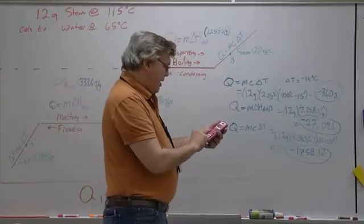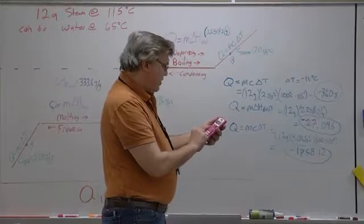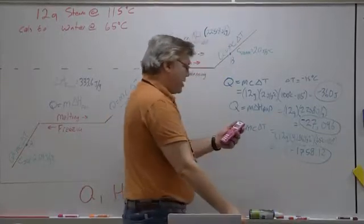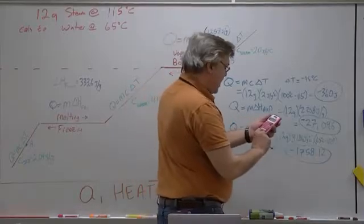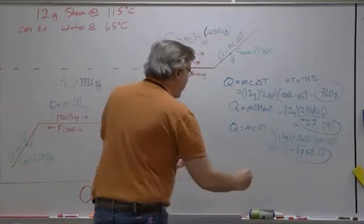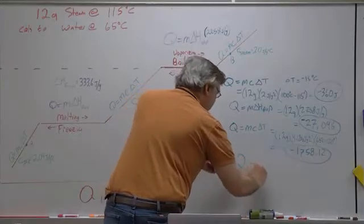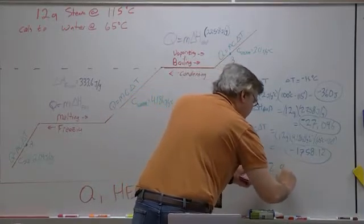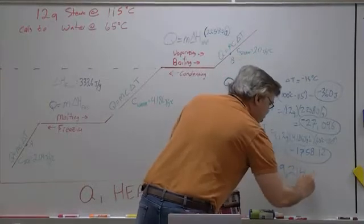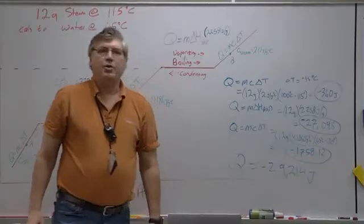So I have that. I have my 27,096. I started with this. It was already in my calculator. And I have 360, which I'm subtracting. And so my total Q is equal to negative 29,214 joules.